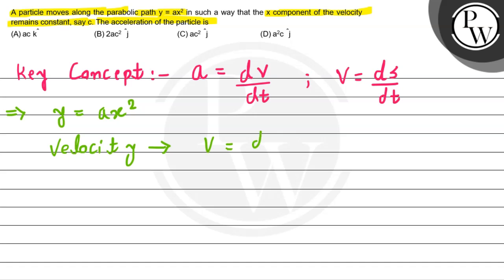The velocity in the y direction, the vertical component of velocity, is v_y equals dy/dt. If we differentiate this with respect to t, we get 2ax times dx/dt. As per the question, the x component of velocity remains constant, which we consider as c. So dx/dt equals c. Therefore, the velocity in the y direction will be 2ax times c.